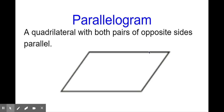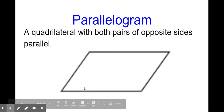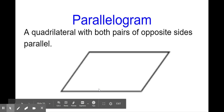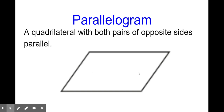A parallelogram is also a figure — it's a quadrilateral, so it has four sides. It's a quadrilateral with both pairs of opposite sides parallel. What that means is opposite means across from each other. So when we say opposite sides, you see where my mouse is — right here and right here, those are opposite to each other. This and this — they're both opposite sides, across from each other.